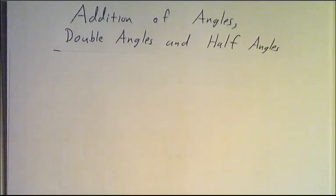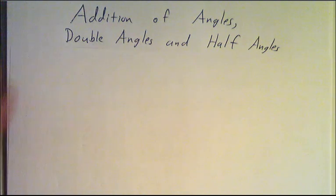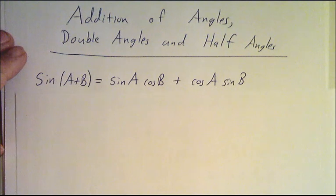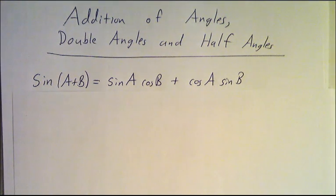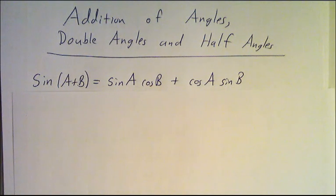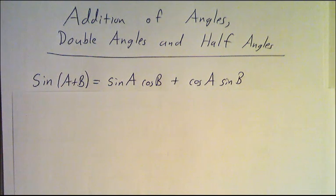Last time we talked about some of the basic trig identities. Now we're going to talk about the addition of angle formulas — specifically the sine of the sum of two angles. If you know the sine and cosine of 30 degrees and the sine and cosine of 45 degrees, can you figure out the sine and cosine of 75 degrees? Yes, you can, and here's the formula.